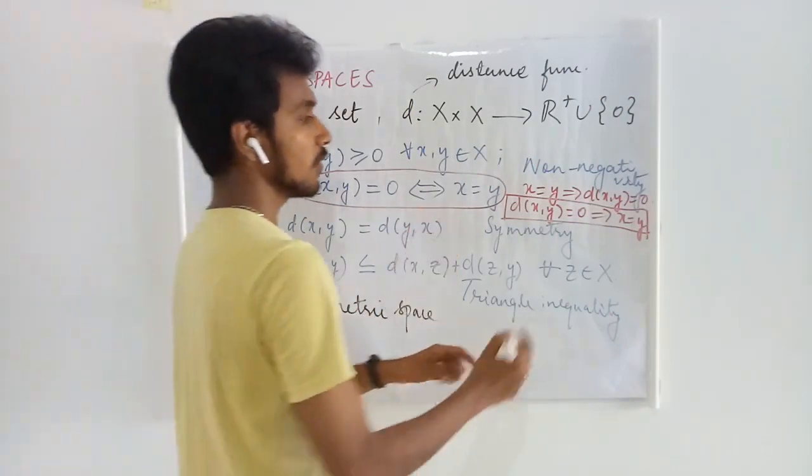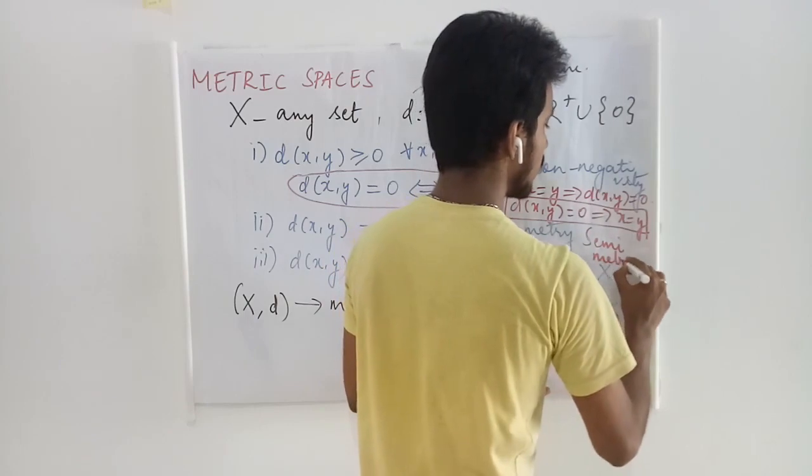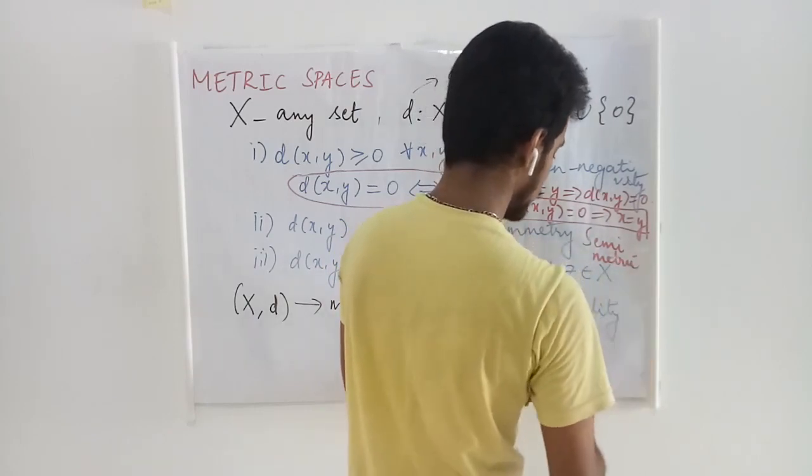If this is so, then we call this kind of function a semi-metric or pseudo-metric.